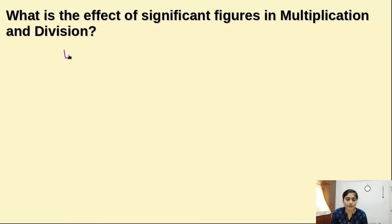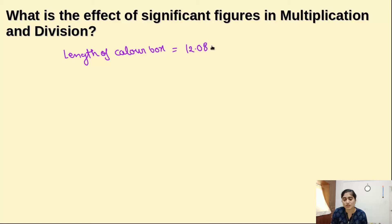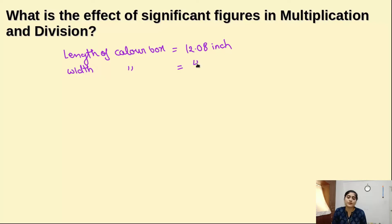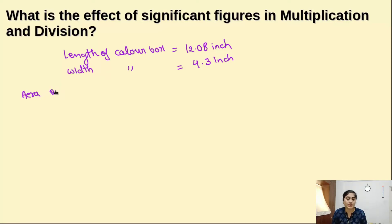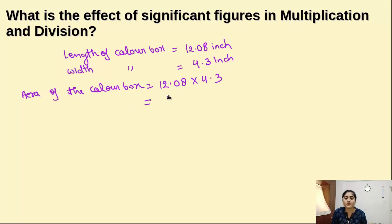Suppose we are taking the length of a color box as 12.08 inches and the width of the color box as 4.3 inches. So what is the area? The area of the color box — we have to multiply length into width. So 12.08 multiplied by 4.3 gives us 51.944 inch square. That is the area.